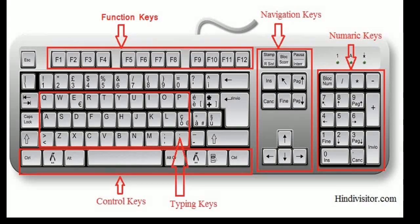Punctuation mark keys include inverted comma, double unit comma and similar marks. Fifth are keys for special symbols — dollar, at sign, hash, etc. Sixth are cursor keys, that means arrow keys.